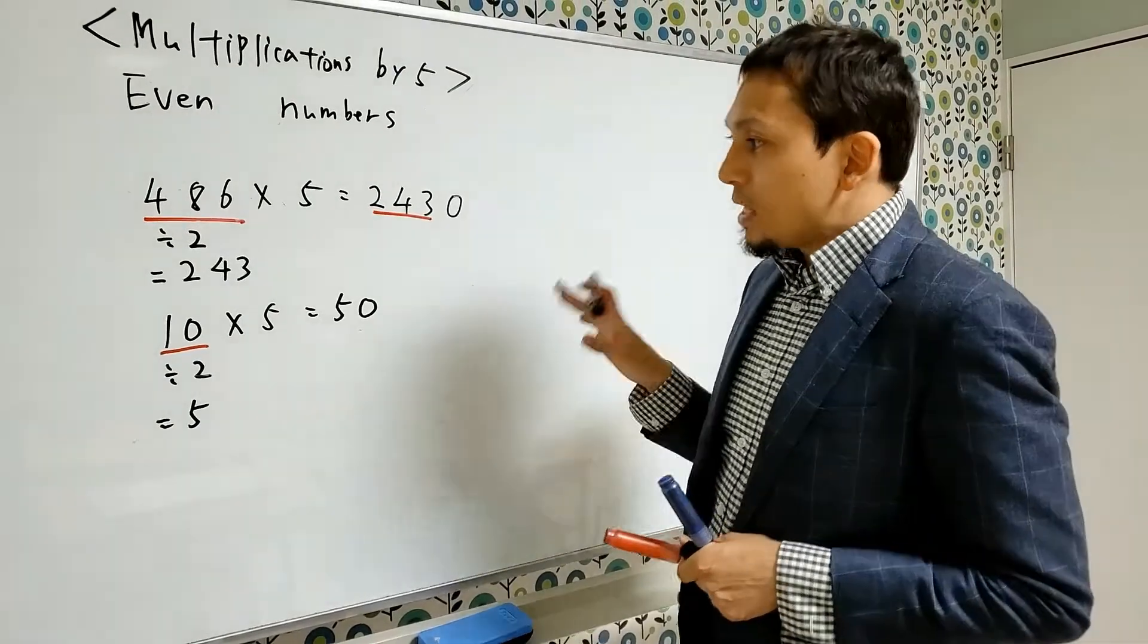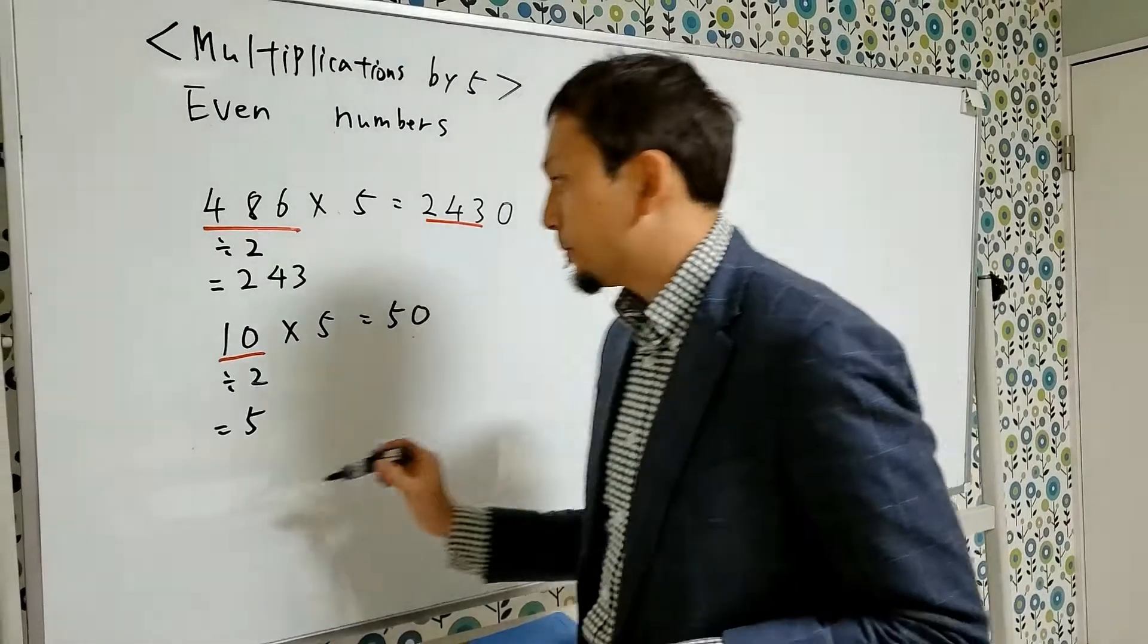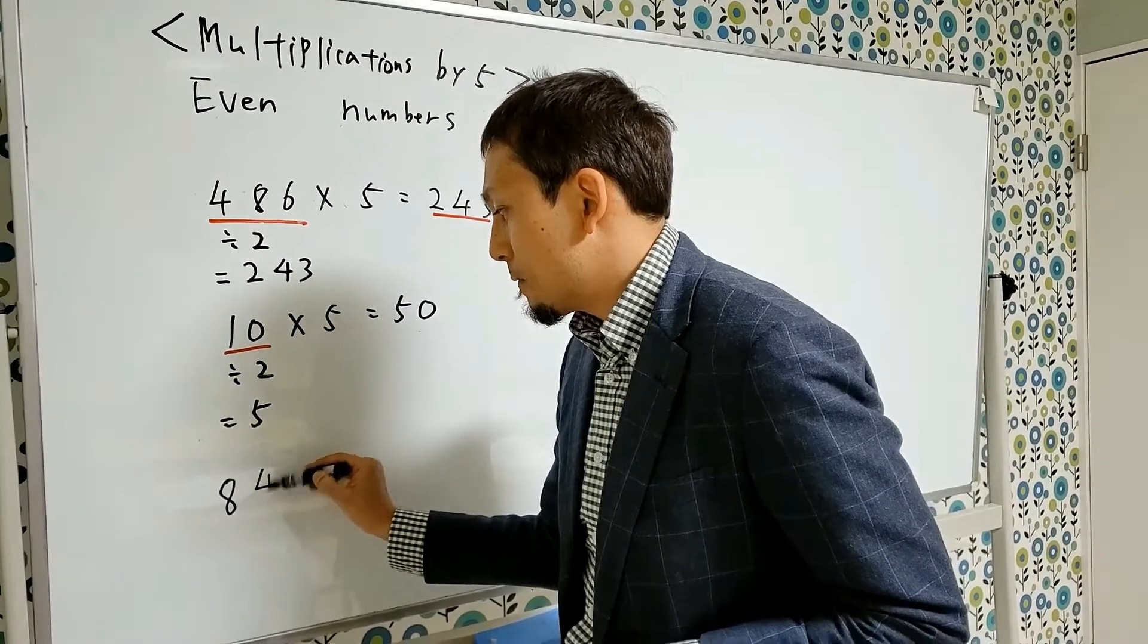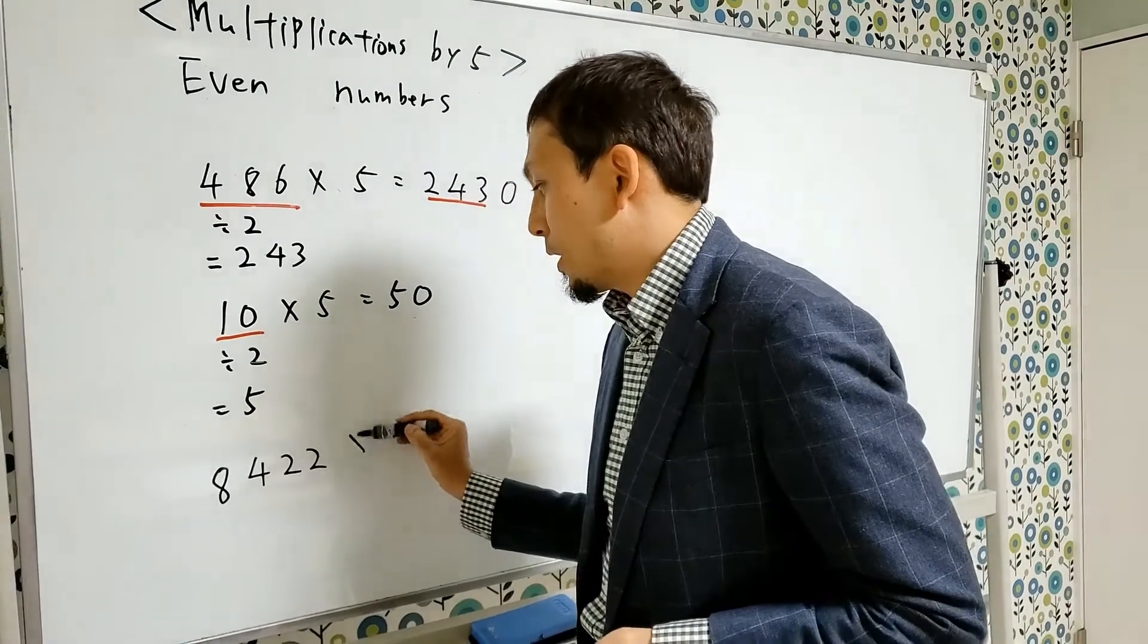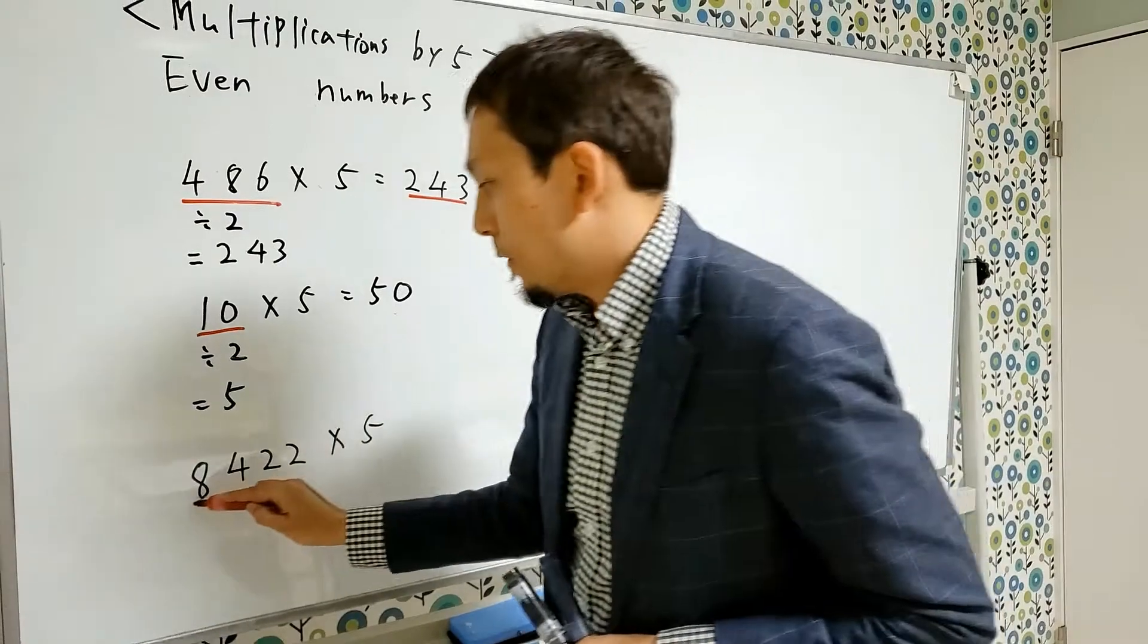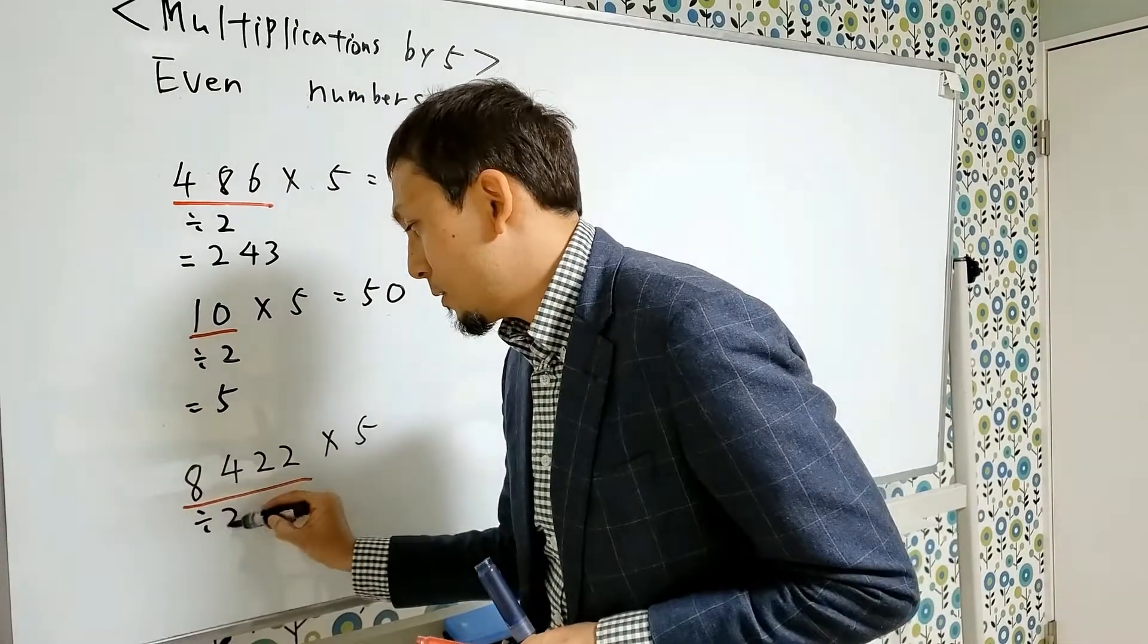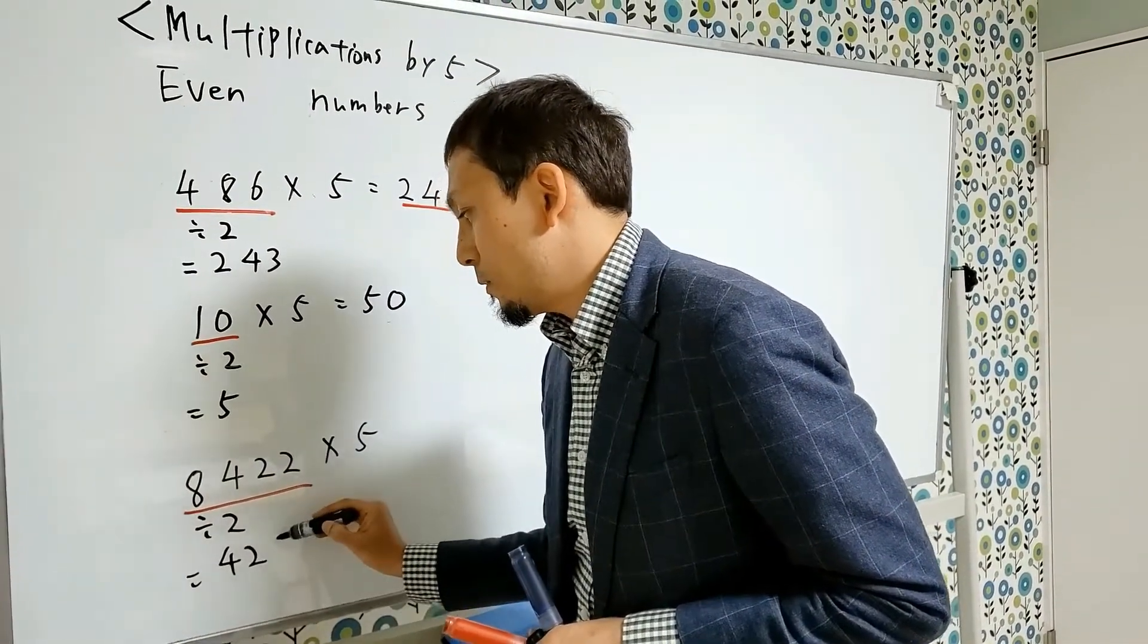So now, let me increase the digits to make it more fun. The next example is maybe 8422 times 5. Right, let's try this question. The first step you do is to divide the number 8422 by 2. Then you get the result 4211.